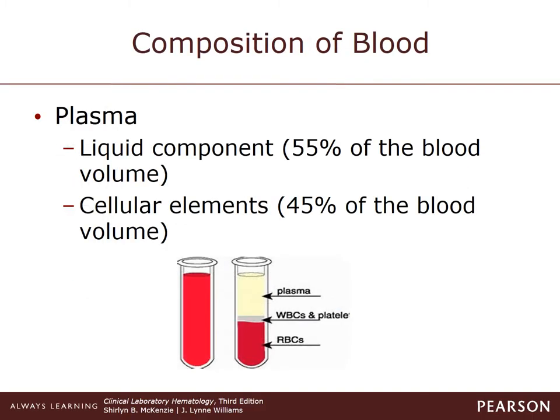Blood is composed of a liquid called plasma and of cellular elements, which include white cells, platelets, and red blood cells. The normal adult has about 6 liters of blood, which is comprised of 7 to 8 percent of a human's total body weight. Plasma makes up about 55 percent of the blood volume, and 45 percent of the volume is composed of these cellular elements.